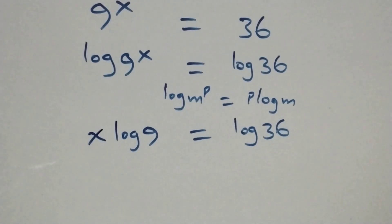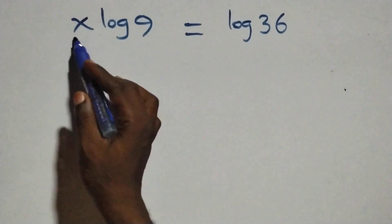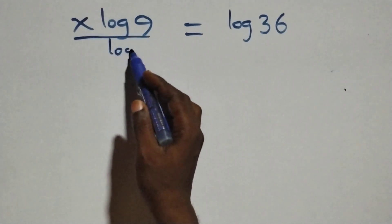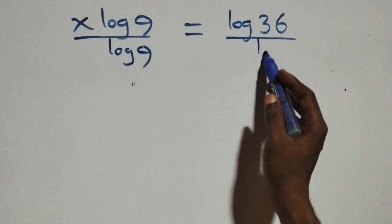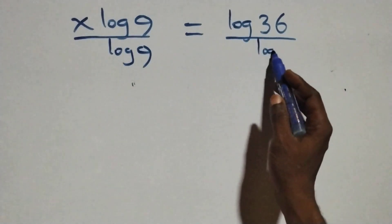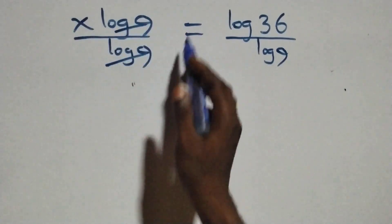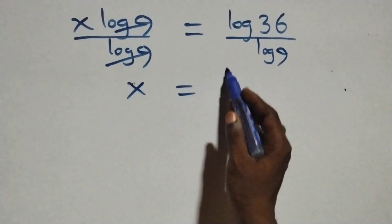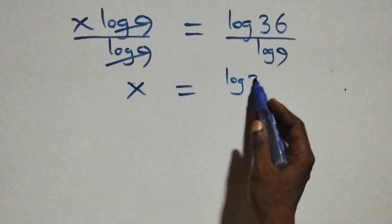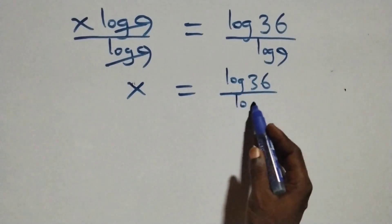From here we divide both sides by log 9 — dividing this side by log 9 and also this side by log 9. The log 9 cancels on the left, and we have x equals log 36 over log 9.